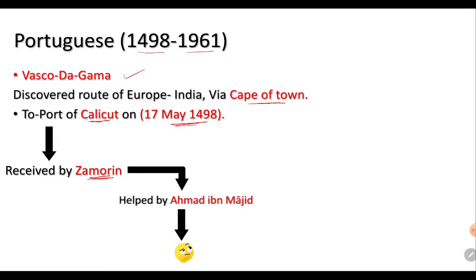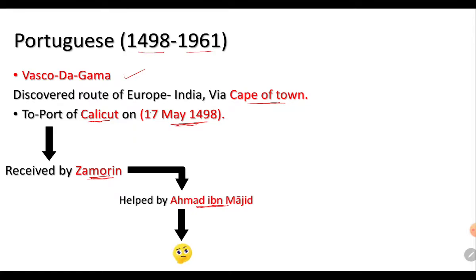Vasco da Gama was helped by Ahmad Ibn Majid, who was an Arabian merchant. That is a brief overview of the Portuguese — let's learn more about them.